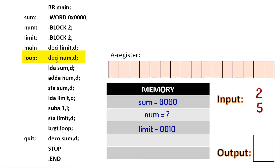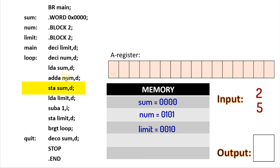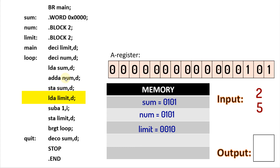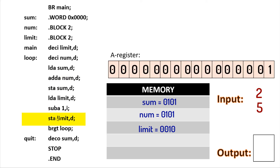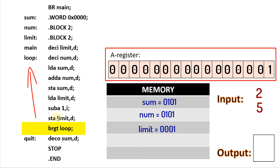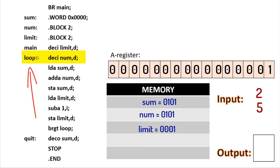The next instruction tells us to load into the accumulator the value in sum. We then add num to the accumulator and store whatever is in the accumulator to sum. We then load limit to the accumulator, which is two. We subtract one from the accumulator, so two minus one is one. We store whatever is in the accumulator into limit, replacing the old limit value two with one. The next instruction tells us to branch if the value in the accumulator is greater than zero to the memory address loop. The value in the A register is one, which is greater than zero, so we branch to loop.